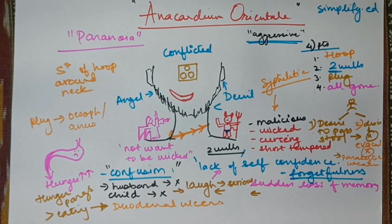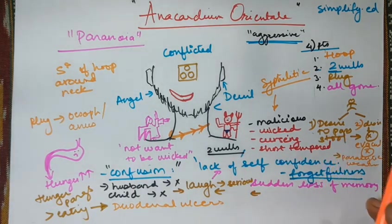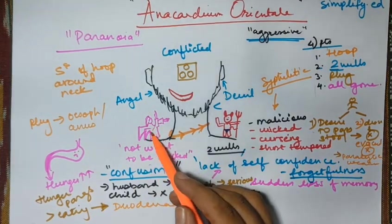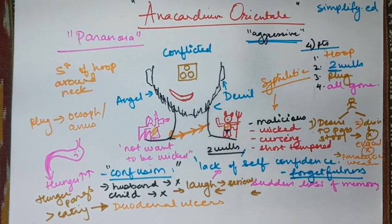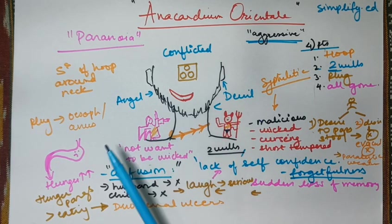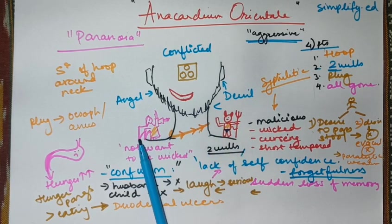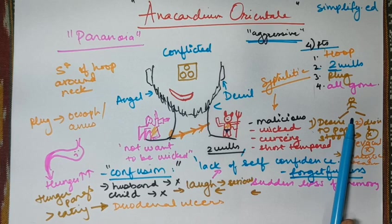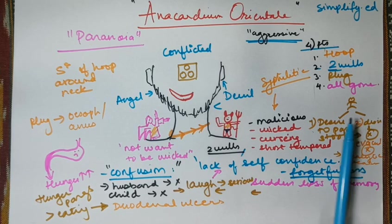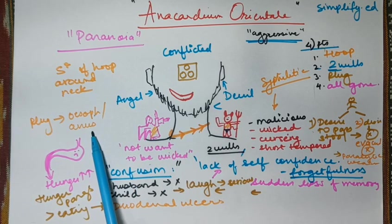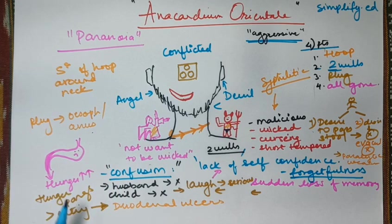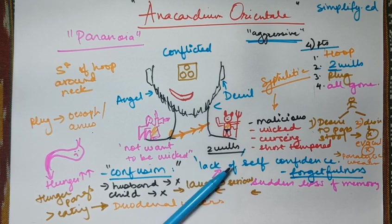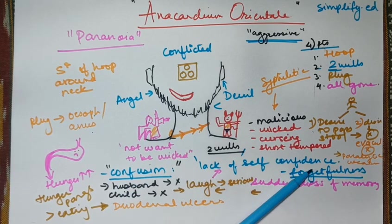So, if we had to sum up anacardium which has been a really small and interesting remedy. First thing which everybody knows about the two wills, there is an angel, there is a devil. The angel is forbidding what devil says, devil is forbidding what angel says. Two wills is also manifested at the symptom of stools. With stools, we also write plug-like sensation in esophagus and anus. Hunger, better by eating. Two wills give rise to lack of self-confidence, confusion and forgetfulness.